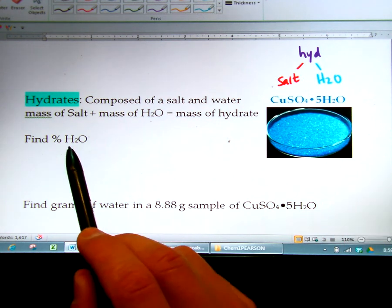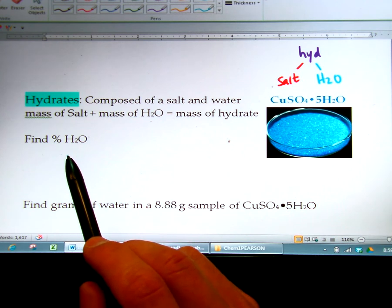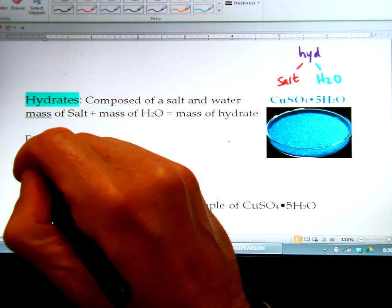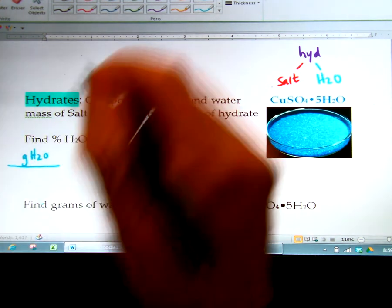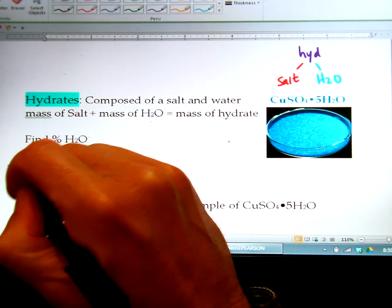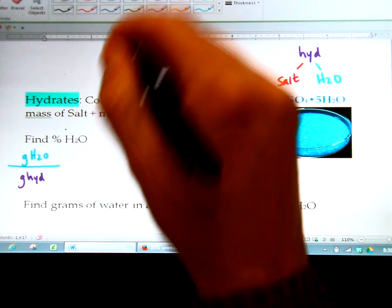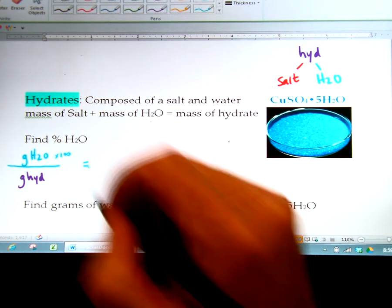Now if you want to find the percent of water in a hydrate, percent is always a part over the whole. So what you would need to know is the grams of the water over the whole thing, which is the grams of the hydrate, and then times 100 would give you the percent. So let's do that.